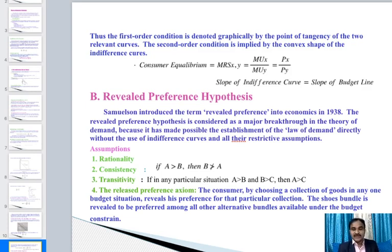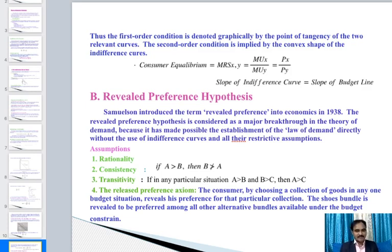The basic assumptions of revealed preference theory are: rationality, consistency, transitivity, and the revealed preference axiom. In this theory, rationality means the consumer is assumed to prefer bundles of goods that include more quantities of commodities.